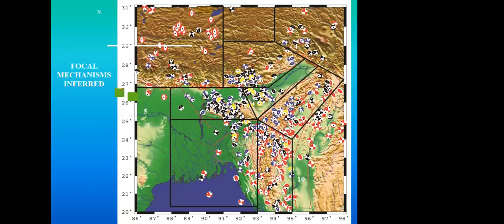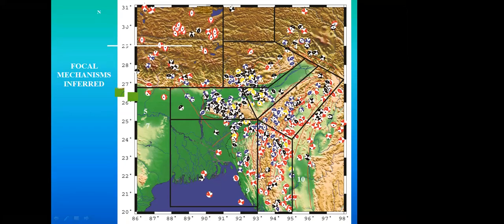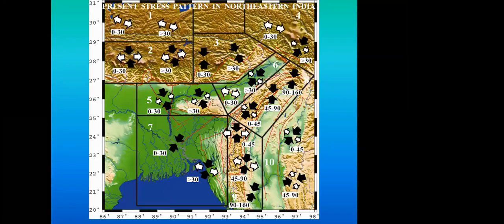We cannot identify a single dominant mechanism prevailing in this region — focal mechanism solutions indicate a mixed combination of strike-slip, thrust, and normal faulting. Except at the easternmost corner in the Indo-Myanmar zone, no single mechanism dominates. This complexity prompted us to carry out detailed stress mapping from the focal mechanism solutions.